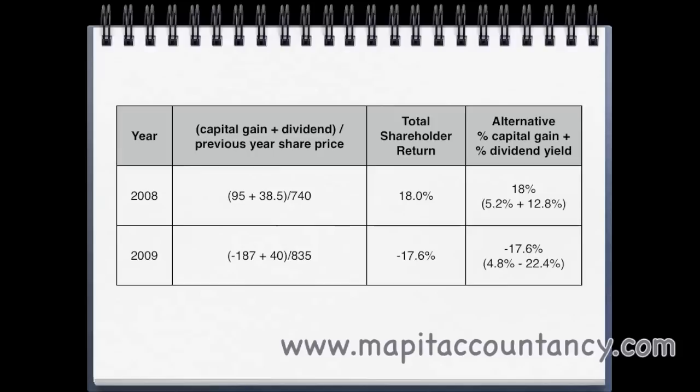So those are the calculations. You need to be able to do those quickly because we're only talking about two marks each — two marks for the capital gain, two for the dividend yield, and possibly two for the total shareholder return, but certainly no more than five in total. That leaves us marks available for the discussion, which needs to address the returns predicted by CAPM. We'll look at CAPM in more detail later, but CAPM will predict what the return on equity should be for each individual business.